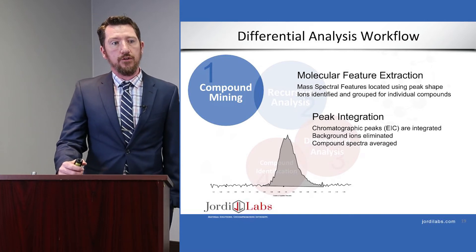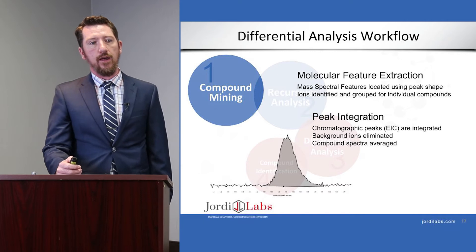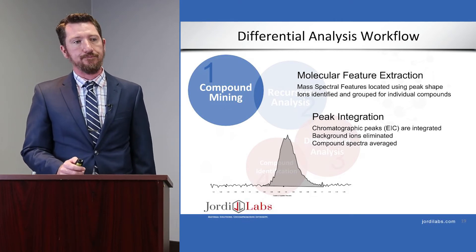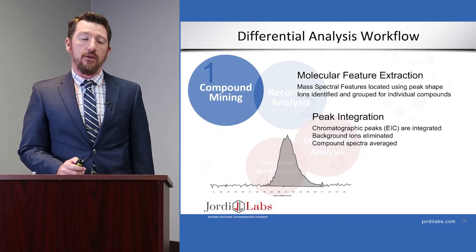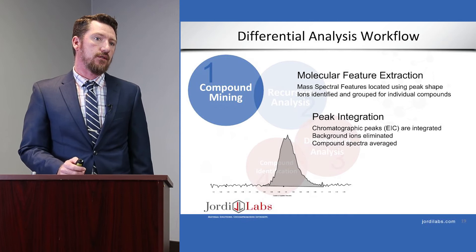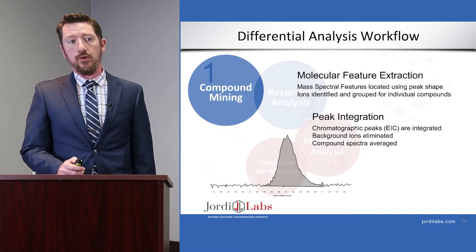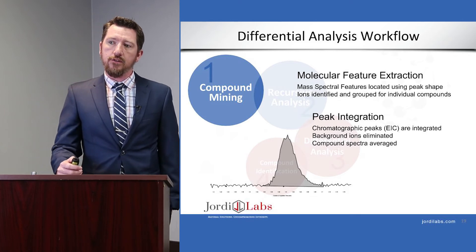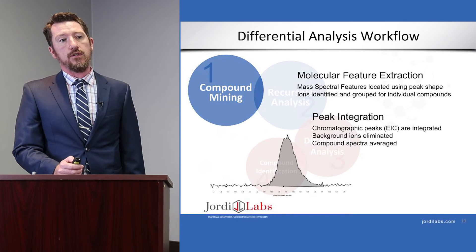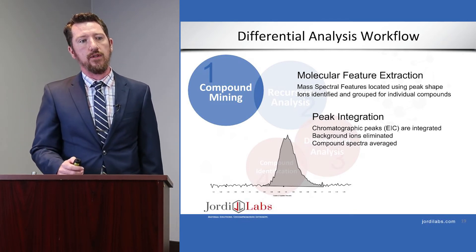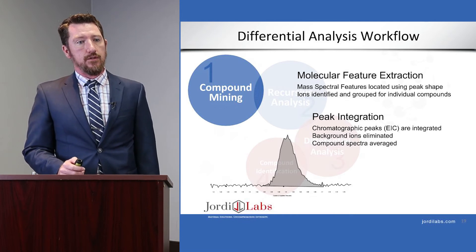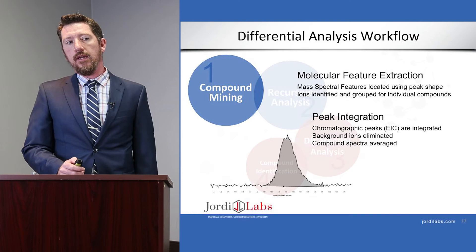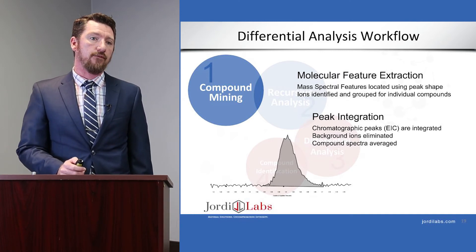Let's take a look at our differential analysis workflow, which has four major parts. The first is finding compounds in a more efficient and less error-prone way. We're going to use software with an algorithm called molecular feature extraction. The software looks at all of the ions in the third dimension of our chromatogram and tries to find changes in their signal that appear to be chromatographic peaks. Those ions will then be grouped together as individual compounds, peaks will be integrated from their extracted compound chromatograms, extraneous ions eliminated, and average spectra generated across the entire peak.